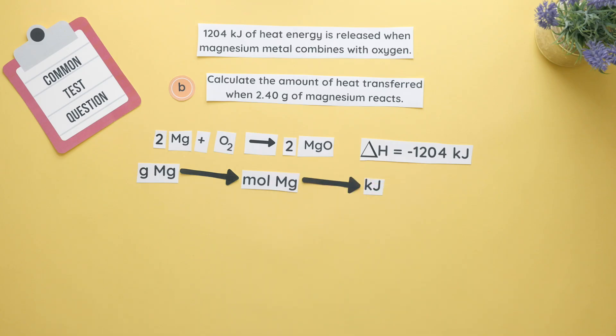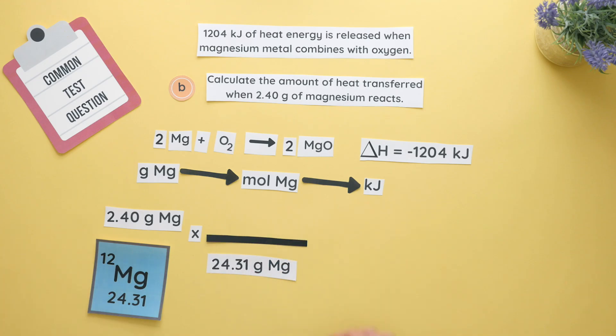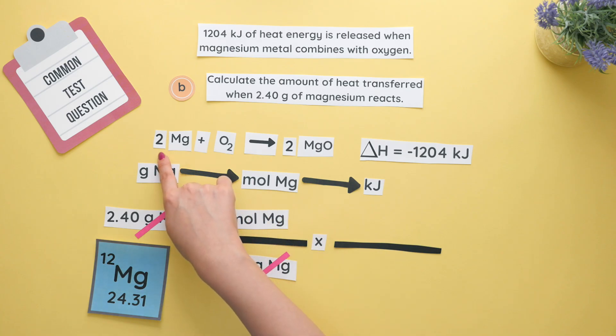Always start with what we are given which was the 2.40 grams of magnesium. To convert grams to moles we will use the molar mass of magnesium which is found on the periodic table. Align grams across from each other so they can cancel and now we are at moles of magnesium. Next we need to convert to kilojoules using the given enthalpy change found in part A. Our units for enthalpy change are really kilojoules per mole. So since we are looking at magnesium our conversion factor will include the number of moles we have for magnesium in our balanced equation which is two.